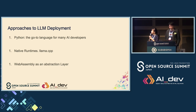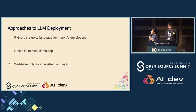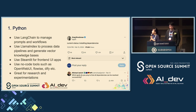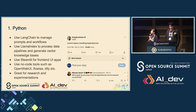The mainstream approaches to deploy large language models can be the following three. The first is using Python to deploy. You would use LangChain to manage prompts and workflows, and use LlamaIndex to process data pipelines. For frontend UI there are other tools. Python is great for research and experimentation.